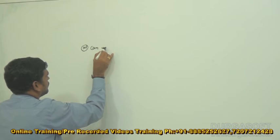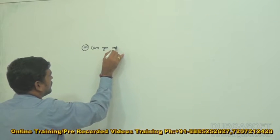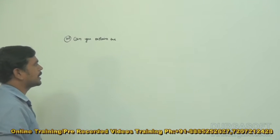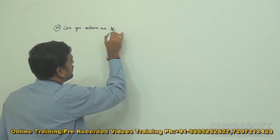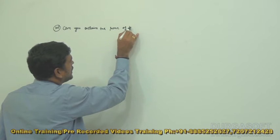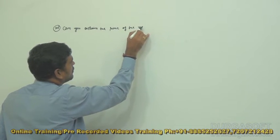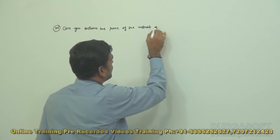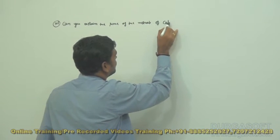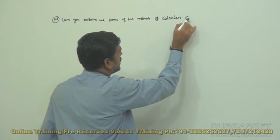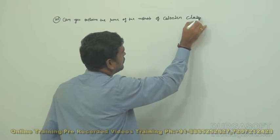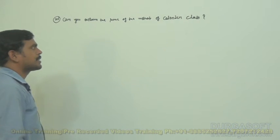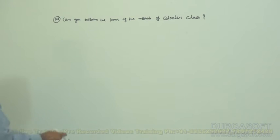Can you explain some of the methods of the Calendar class? How to get the Calendar class and some of the methods — I am trying to explain here.